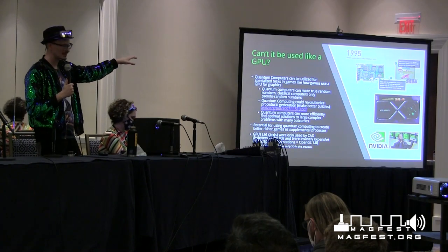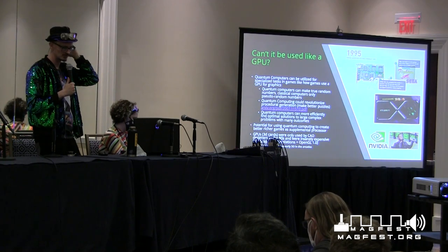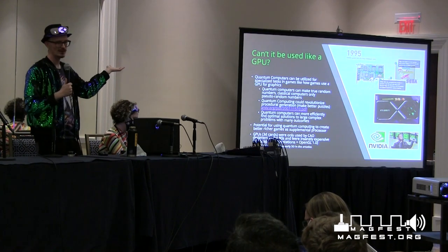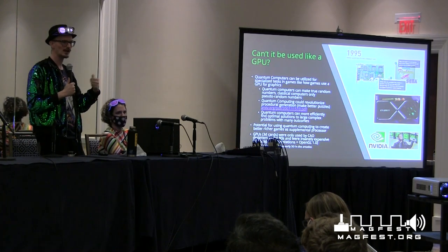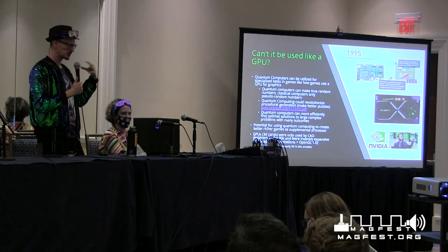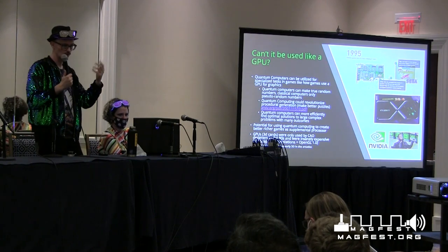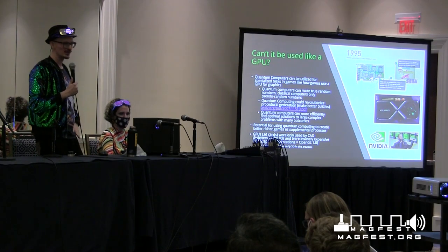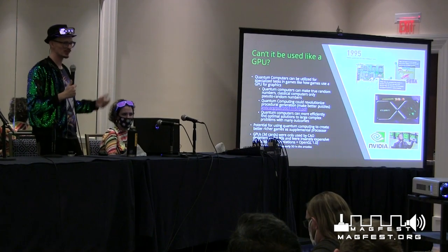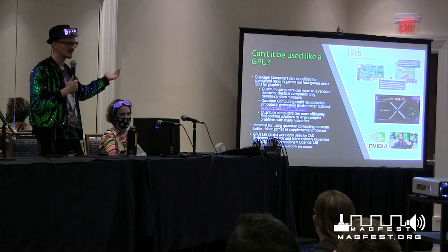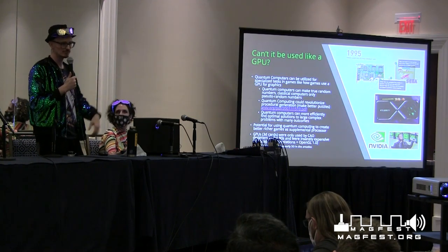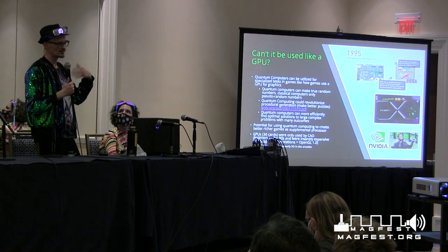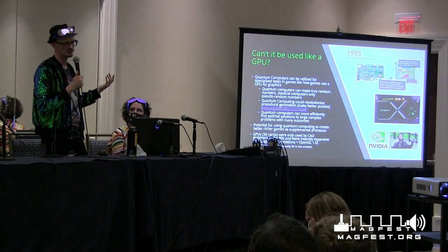Eventually people figured out you could use 3D cards for all kinds of cool calculations — deep learning. When you use Facebook, social media, or Google, they're doing stuff on the back end using 3D processors. Jensen Huang of NVIDIA just wanted to make kick-ass 3D cards for games. Now he's accelerating AI models and searches. No one would have predicted that back then. I think the same thing will happen with quantum computers — they're going to be able to do something we can't predict now because they're so nascent.